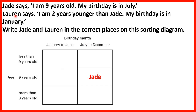Now Lauren is 2 years younger than Jade, so if Jade is 9 years old and Lauren is younger, Lauren will be less than 9 years old. And her birthday is in January, so she'll need to be in this column here. So Lauren is in this section to show that she's less than 9 years old, and her birthday is between January and June.